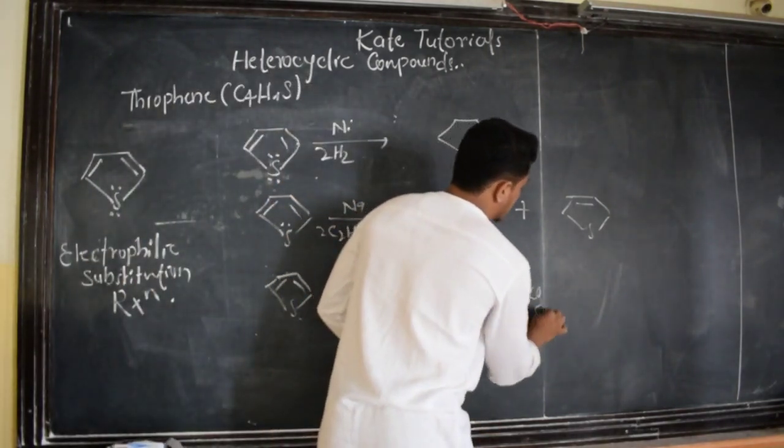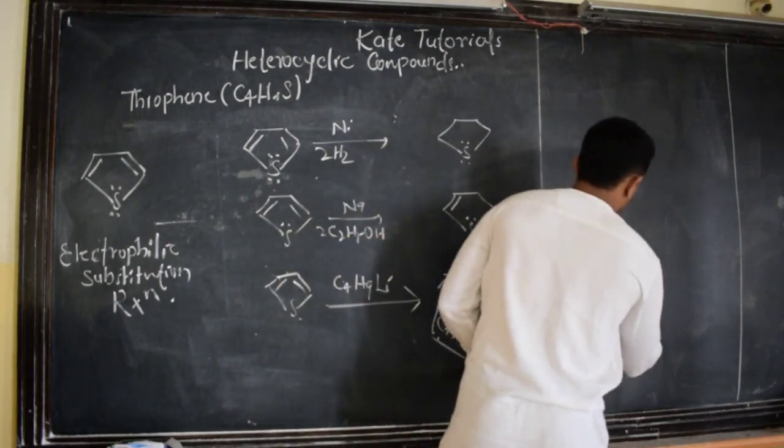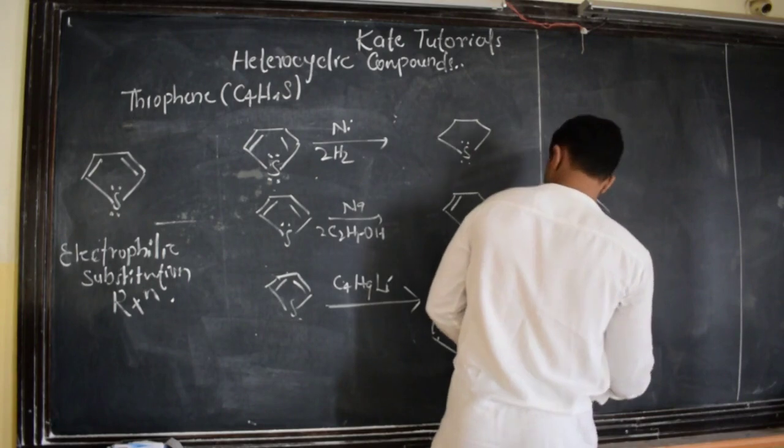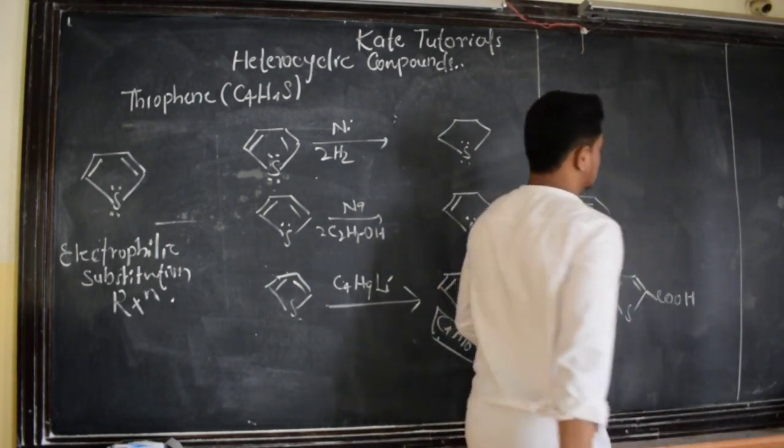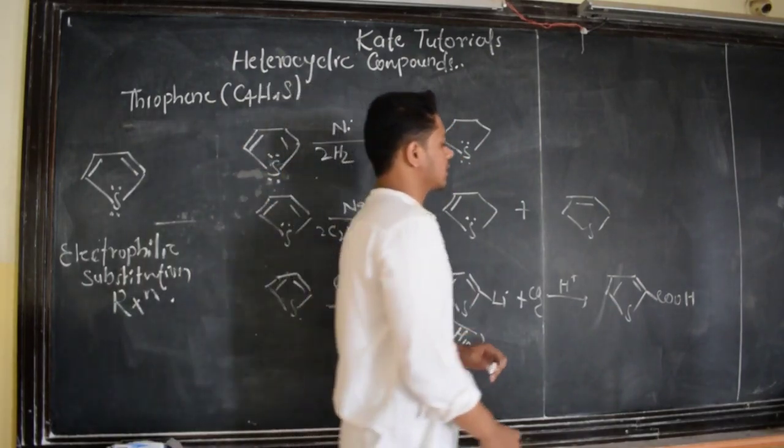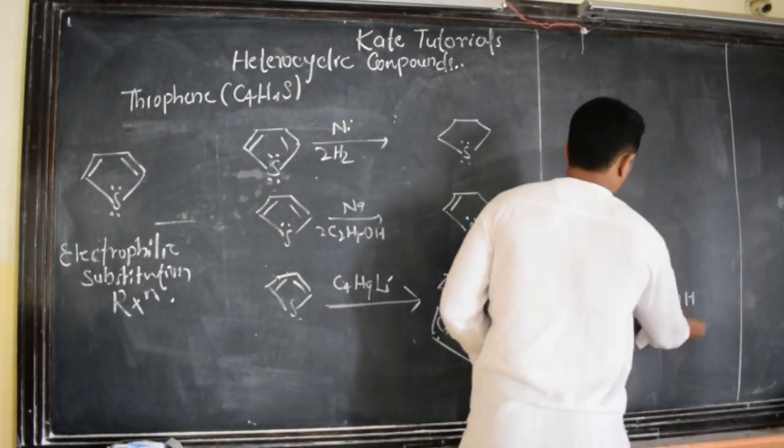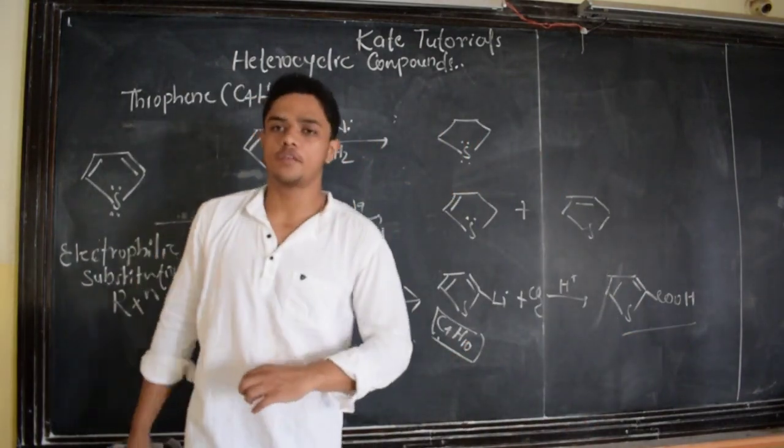And this compound, when treated with carbon dioxide in presence of acid media, then we are going to get acid group COOH. This is thiopinic acid like this. Here we are going to get acid group. This is how few reactions of thiophene.